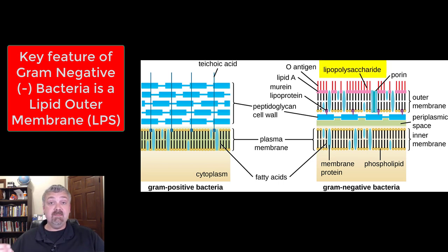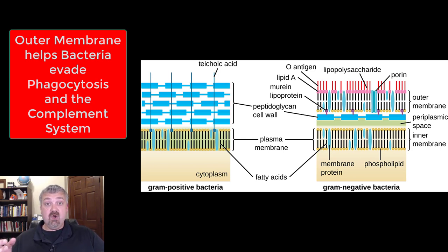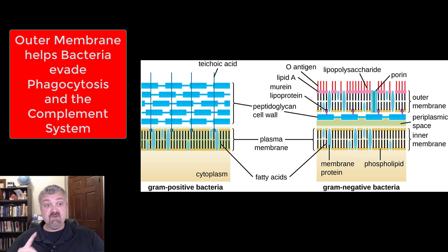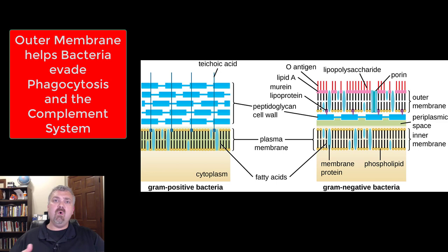I usually call the outer membrane the LPS membrane, for lipopolysaccharides. This outer membrane has a very strong negative charge, and that's what makes it so dangerous. The strong negative charge helps gram-negative bacteria evade phagocytosis — the process where neutrophils and macrophages engulf and destroy bacteria — and it also helps evade the complement system, protecting these bacteria from two key parts of the host immune system.